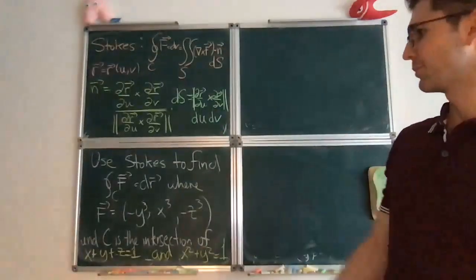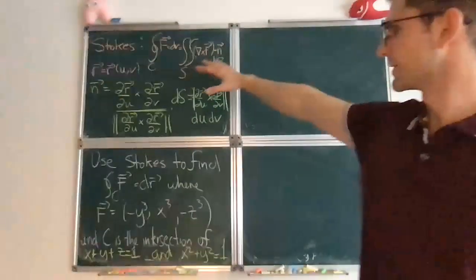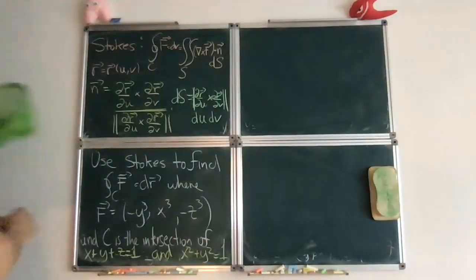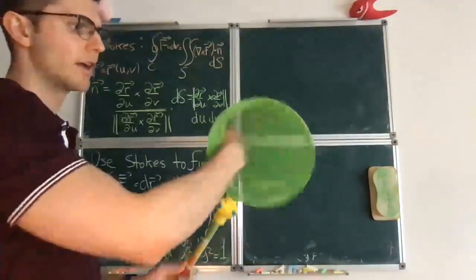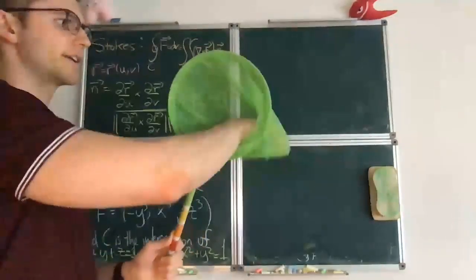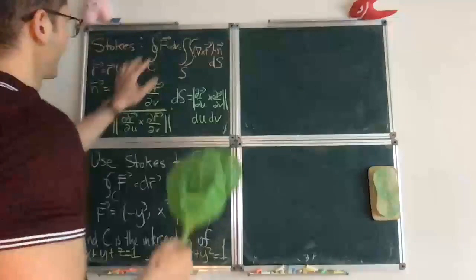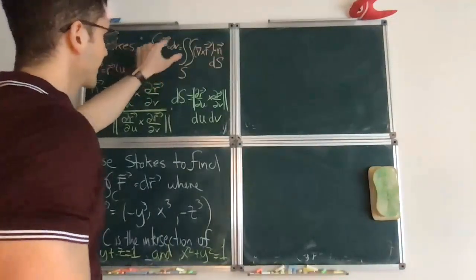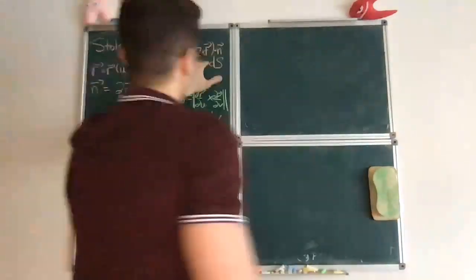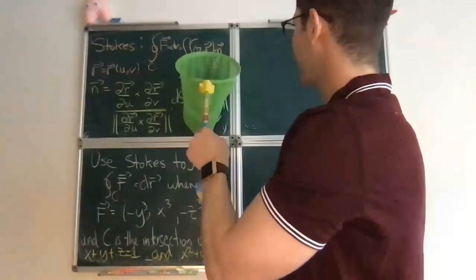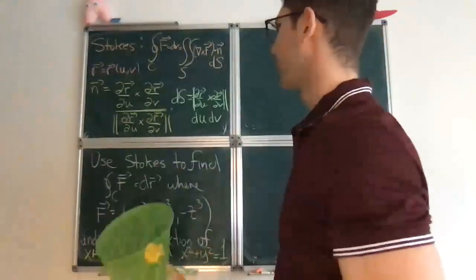So here's another example of Stokes' Theorem. Again, the statement of Stokes' Theorem says that if you want to find the work or a line integral along a curve, just find a surface whose frontier, whose boundary is this curve. Instead of computing the integral directly, you can compute the integral over the surface of the dot product between the curl and the normal vector.